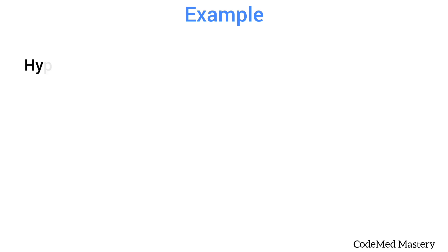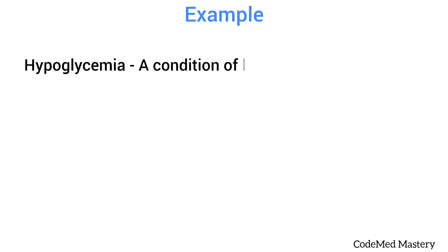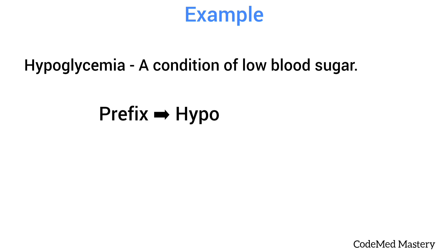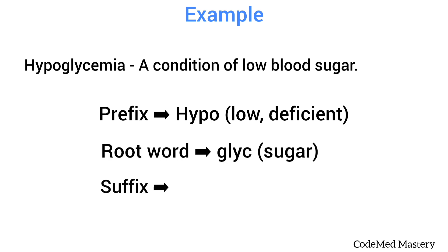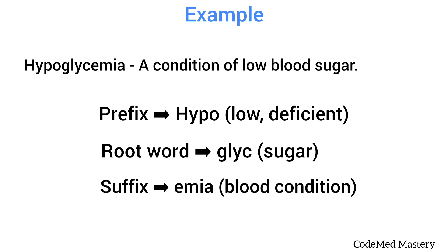Here's an example: hypoglycemia. Hypoglycemia means a condition of low blood sugar. Here, 'hypo' is the prefix which means low or deficient. The root word is 'glyce' which means sugar, and 'emia' is the suffix which means blood condition.